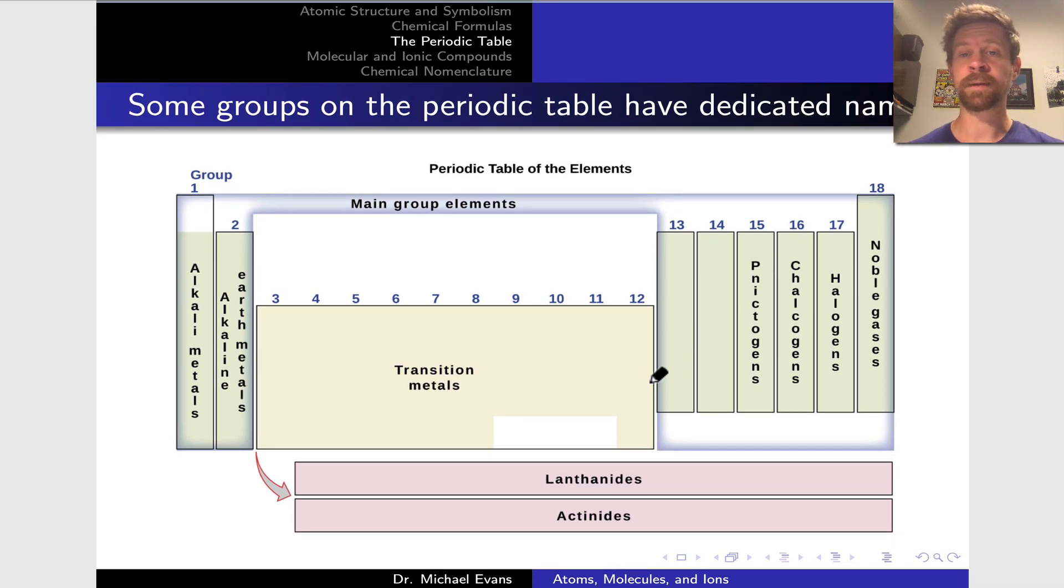Many of the groups on the periodic table have dedicated names. Talking about groups strictly as a column of elements on the periodic table, many columns have specific names that chemists use to refer to them. Group 1 is the alkali metals. These are things like lithium, potassium, sodium. The alkaline earth metals, magnesium, calcium, etc., are group 2.